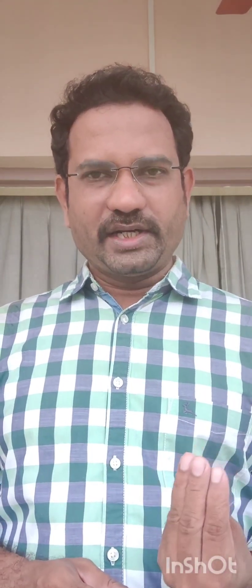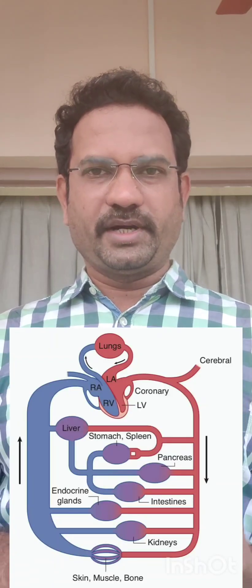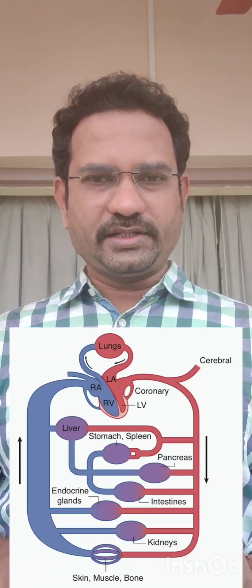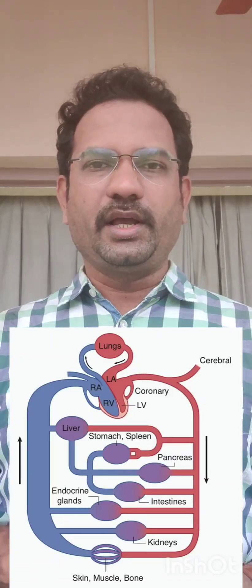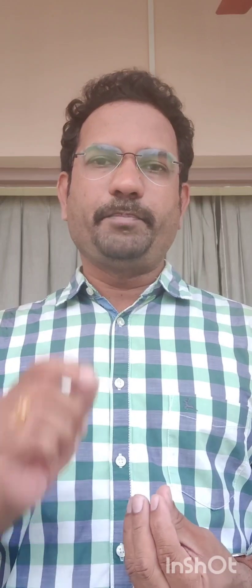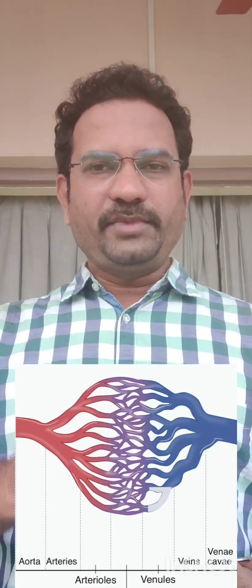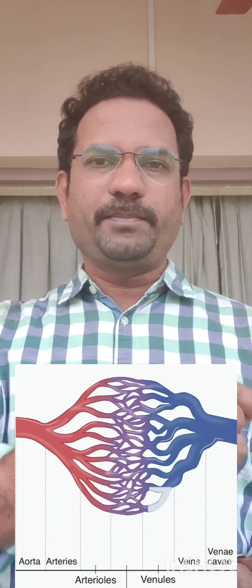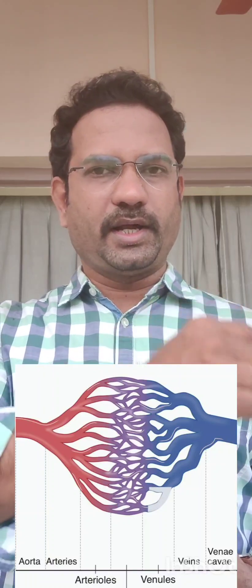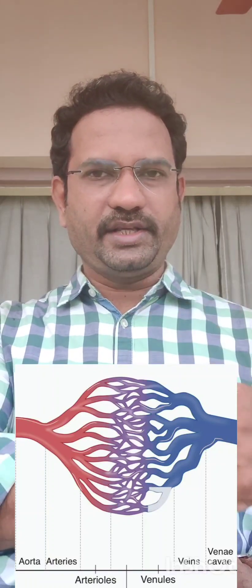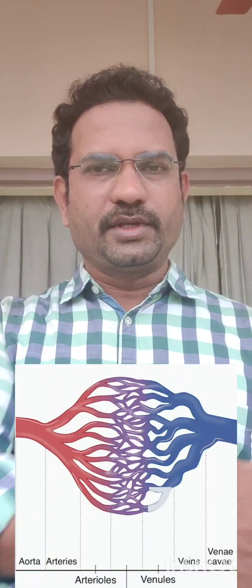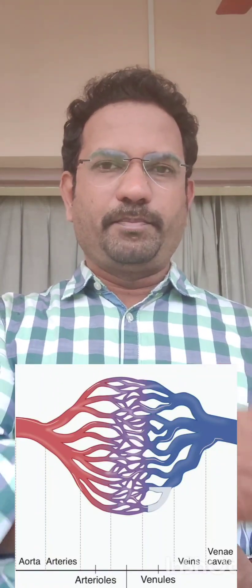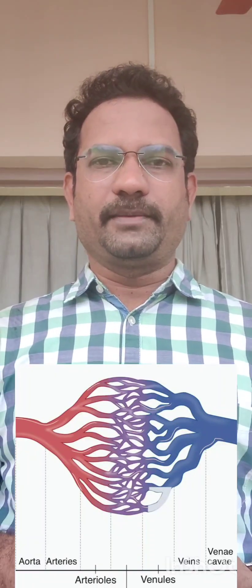Let us understand about cardiac circulation. When the left ventricle contracts, it contains oxygenated blood. When it contracts, blood is drained to the aorta — the biggest artery in the human body. From the aorta, blood reaches each and every part of the body: aorta to arteries, arteries to arterioles. So all body parts receive oxygenated blood.